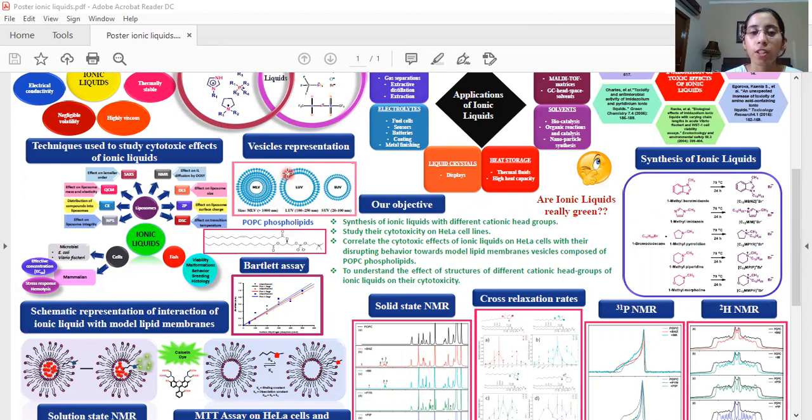Our objective is to synthesize these ionic liquids with different cationic head groups but the same alkyl chain length and bromide ions so that we can study the effect of these cationic head groups on their cytotoxicity towards the HeLa cell lines and this is further correlated with their disrupting behavior towards the model POPC lipid membrane vesicles using the fluorescence spectroscopy.